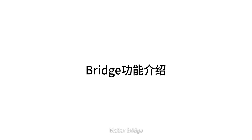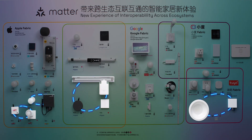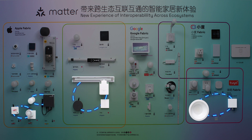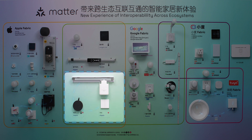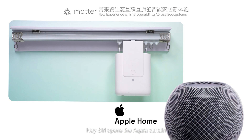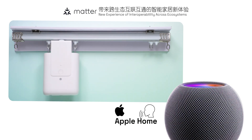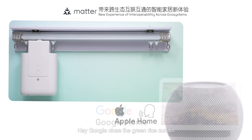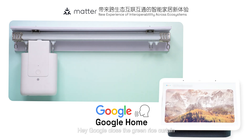Non-Matter devices connected through bridges can have the same control experience as other Matter devices. Take the devices connected through the Aqara bridge as an example. We can use both Apple Home and Google Home to control the Zigbee curtain motor. Hey Siri, 打开绿米窗帘. Hey Google, 关闭绿米窗帘.